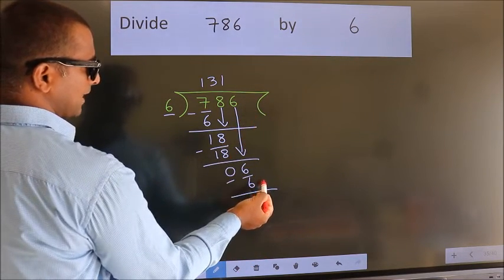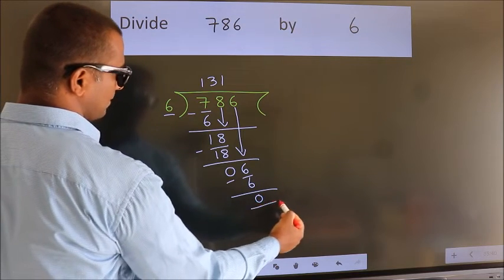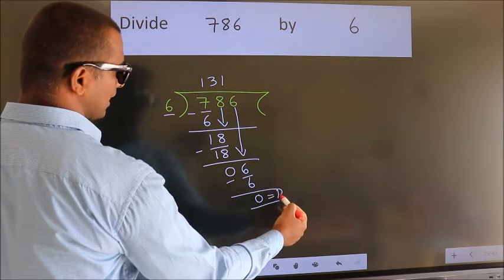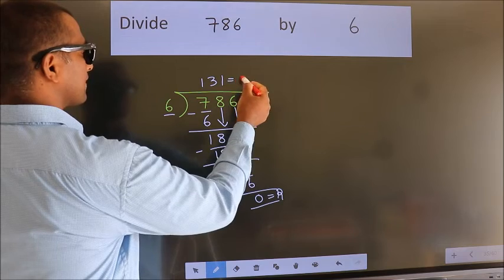No more numbers to bring it down. So we stop here. This is our remainder. This is our quotient.